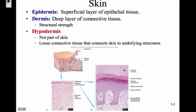Okay, so the epidermis — the layers of the skin. We have the epidermis, which is an epithelial tissue layer; it's very thin and superficial. The dermis is deep to the epidermis, a layer of connective tissue that gives the skin its structural strength. The hypodermis is actually not part of the skin, but it's right under the dermis and has loose connective tissue that helps connect the skin to underlying structures.